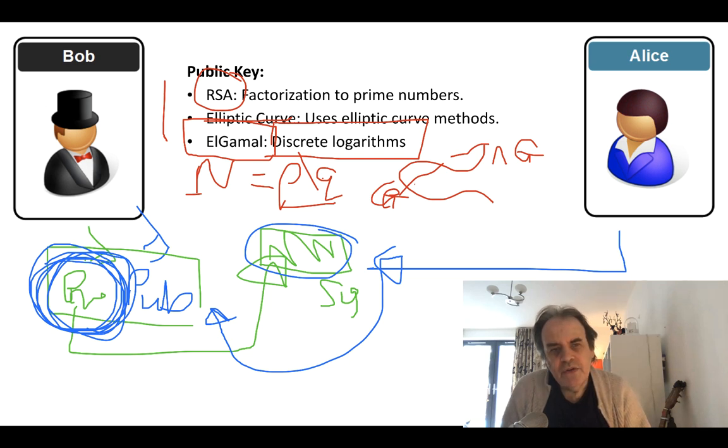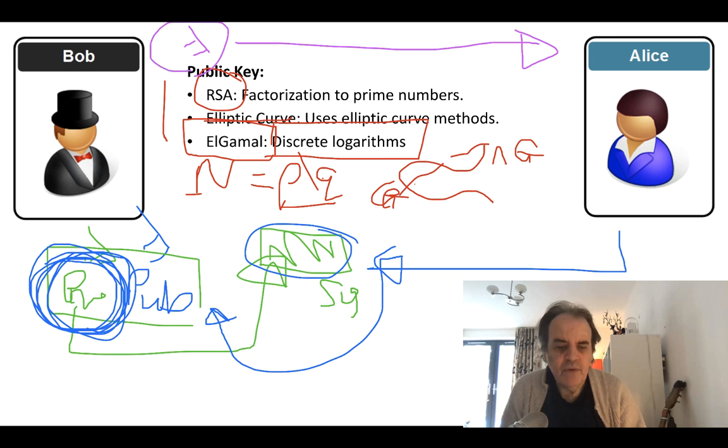We can also use it if we generate a symmetric key and we want to pass it to Alice. In this case, Bob would encrypt with Alice's public key. And then Alice would decrypt with her private key to be able to get the same shared key. So those are the main areas that we look to use public key encryption.